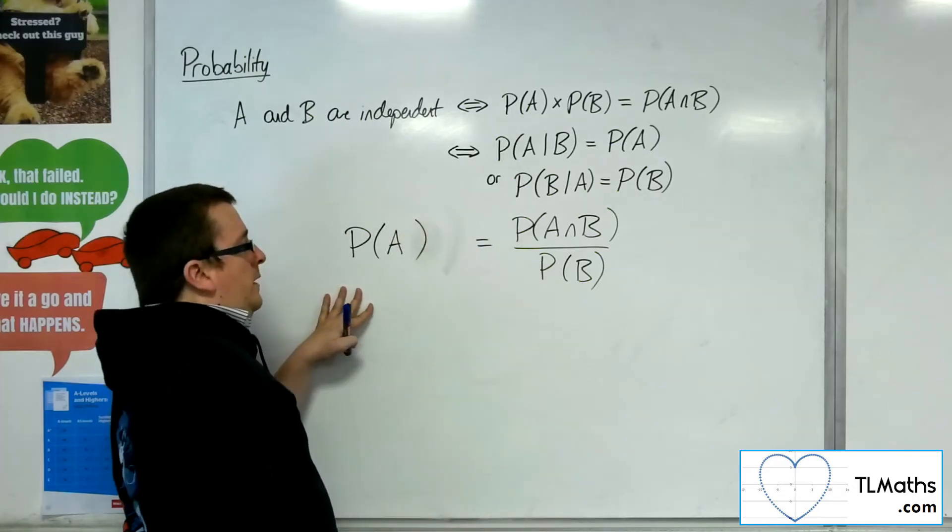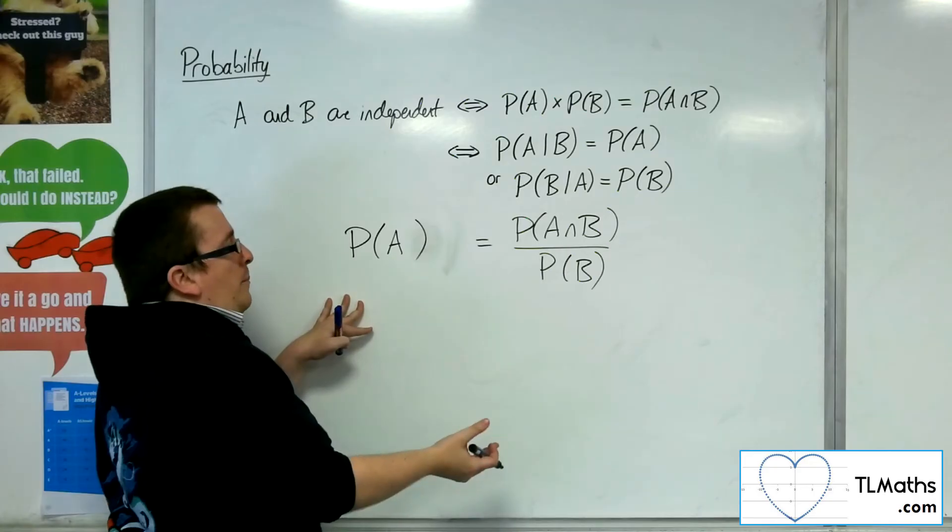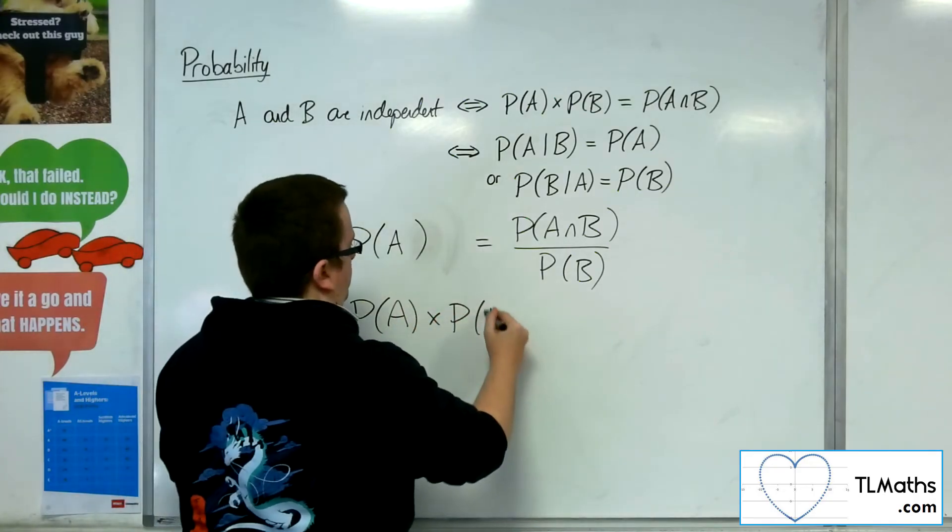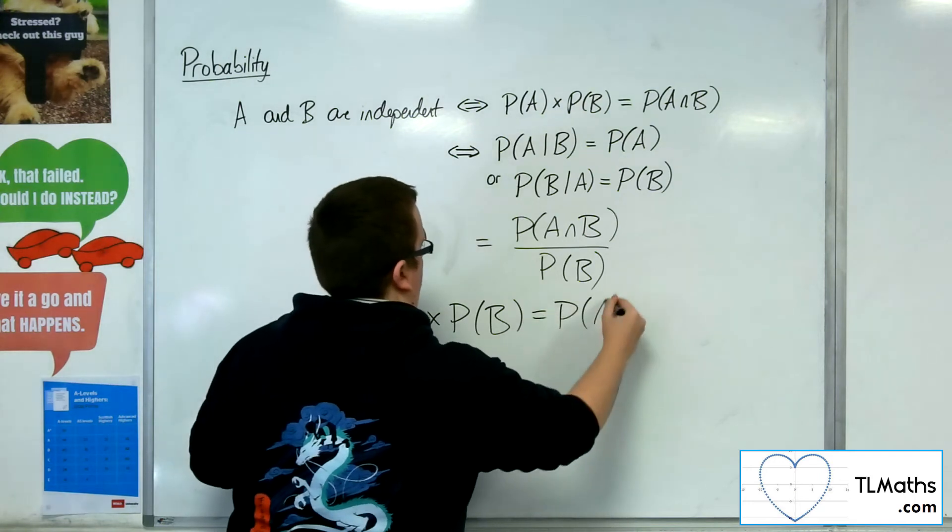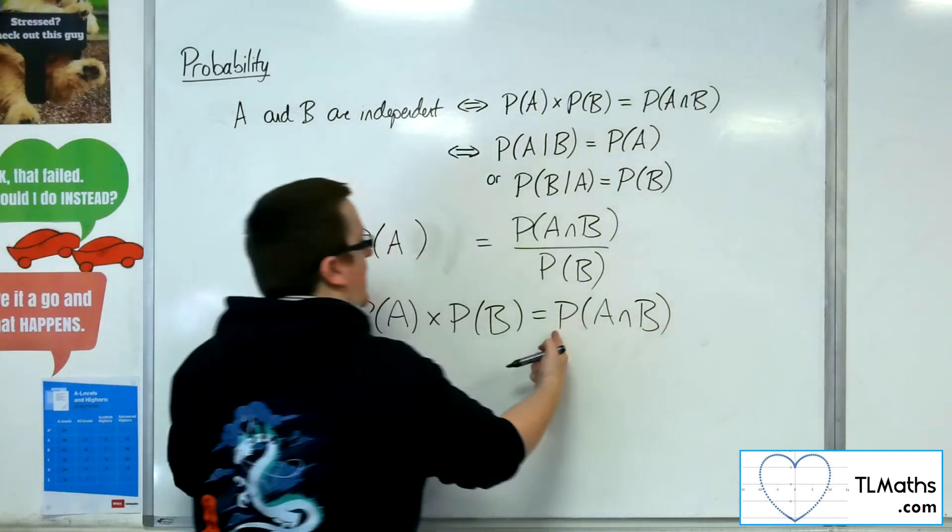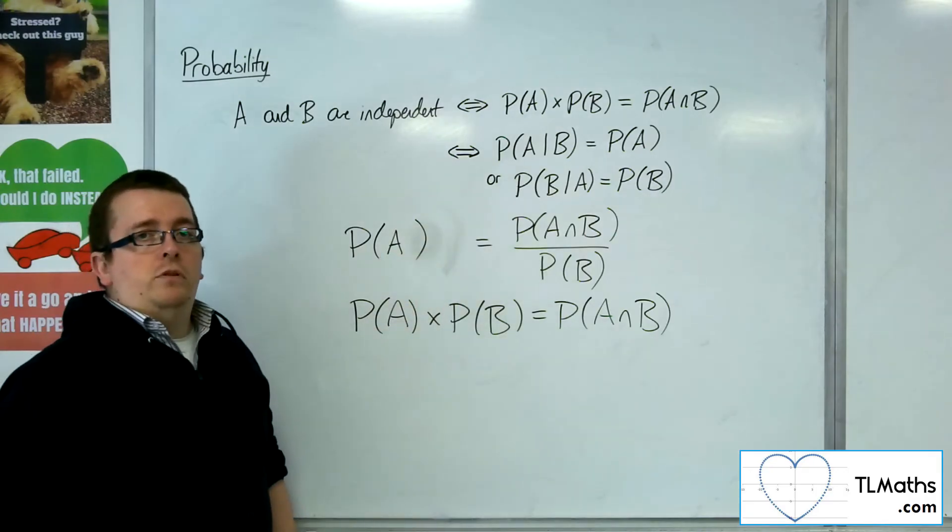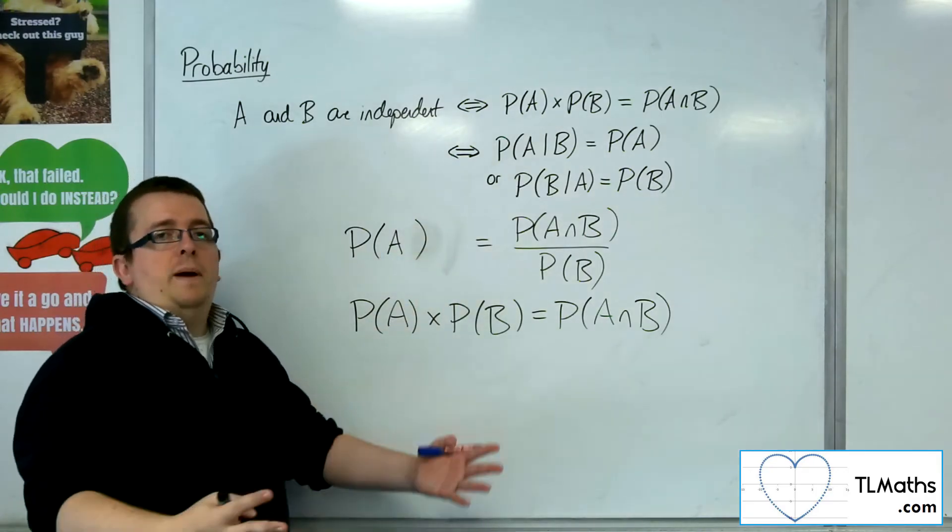There we are. So then you can multiply up by the probability of B, and lo and behold, you get exactly the same formula that we had before for independent events.